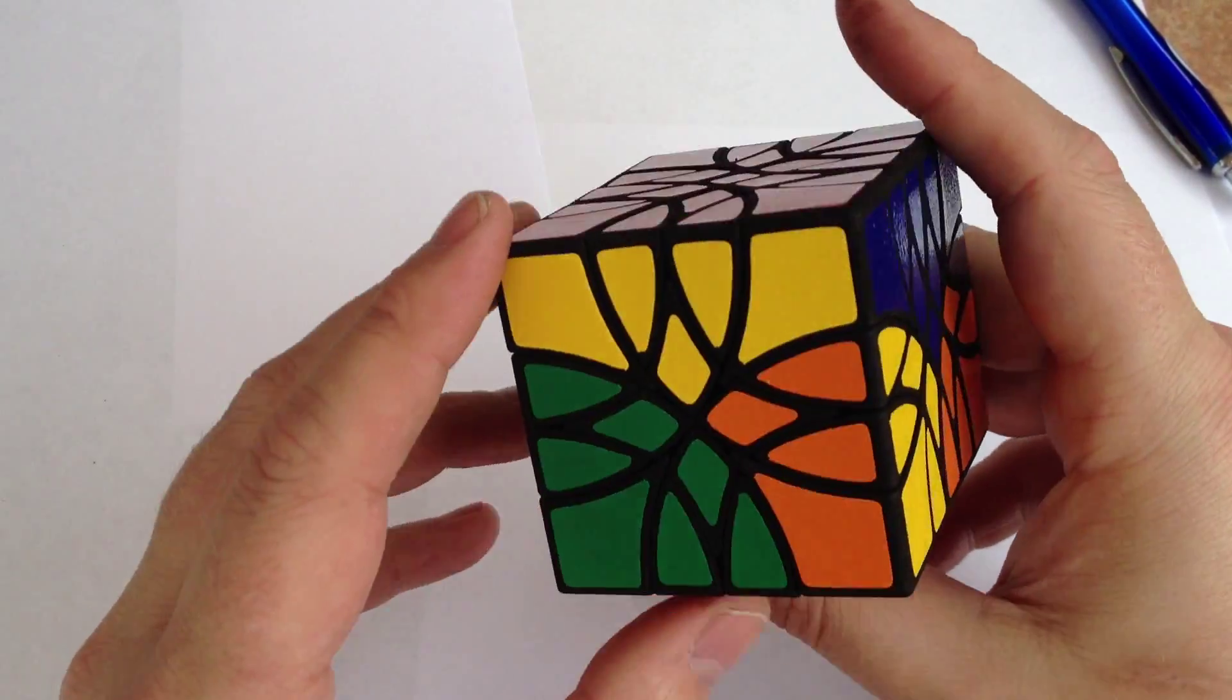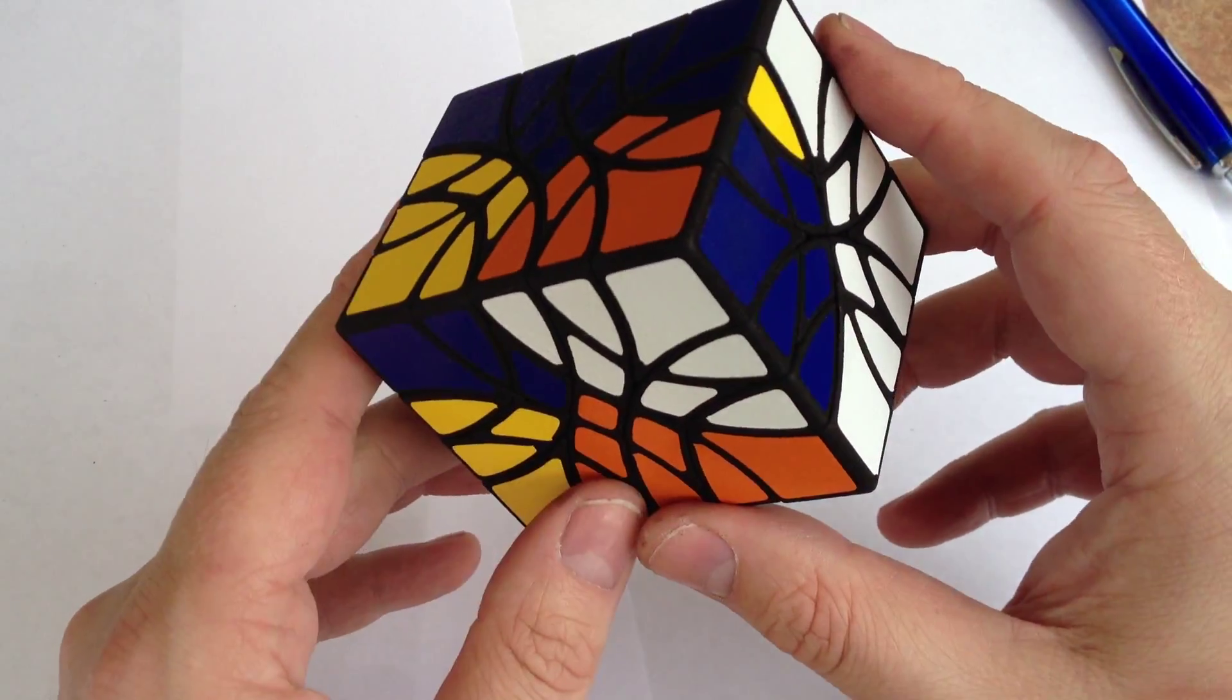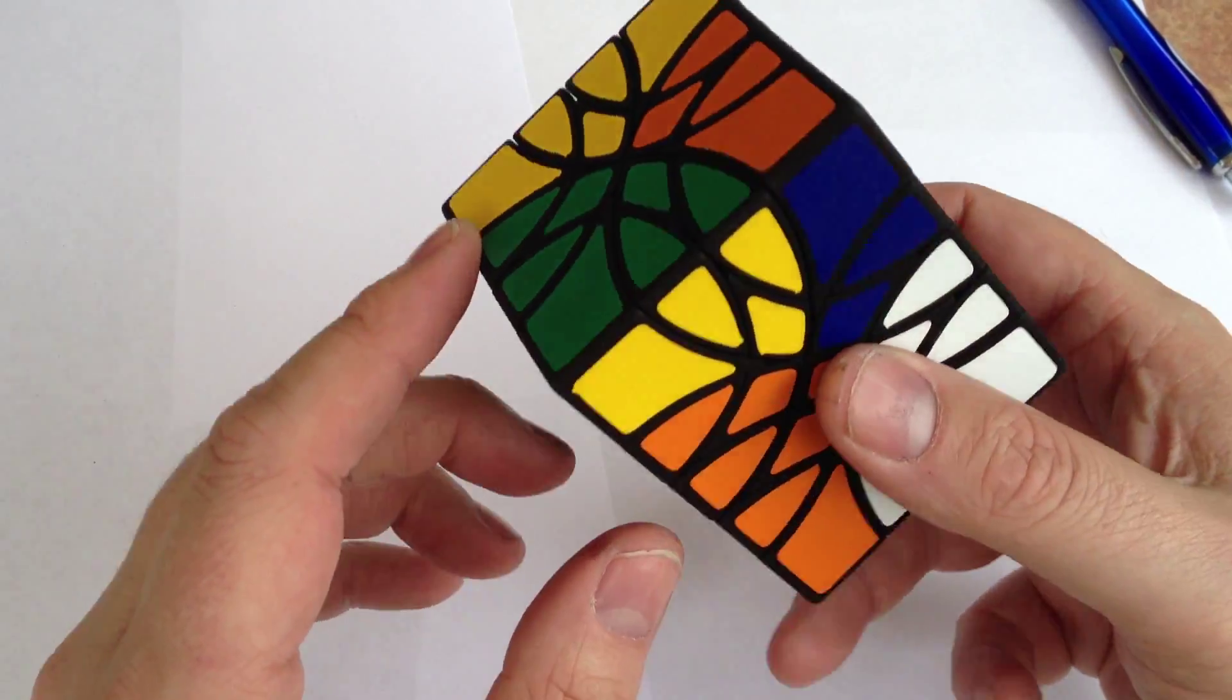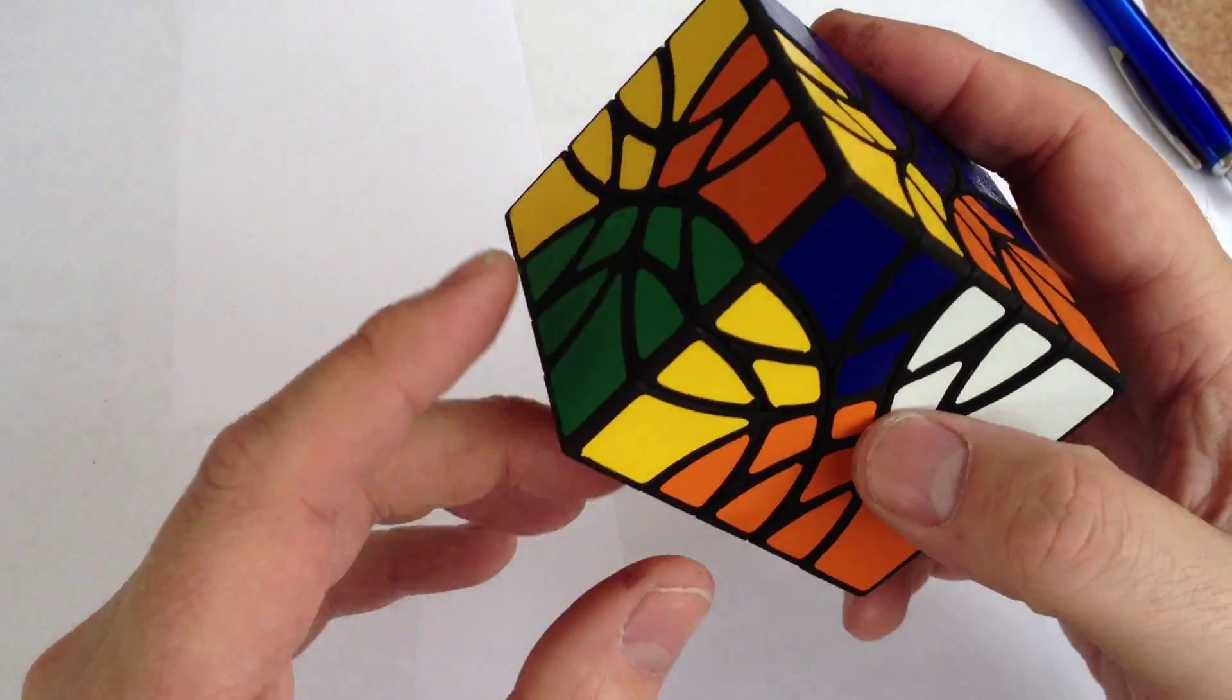Hello, my name is Carl Hoff and I'd like to introduce the Bubboloid 122 puzzle. Here it's partially scrambled.